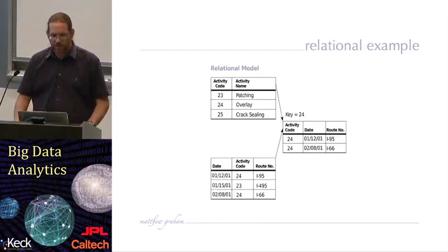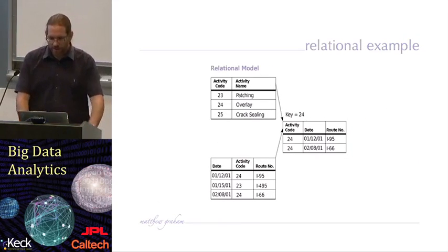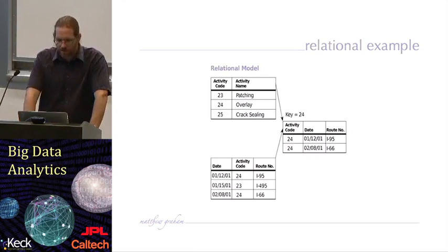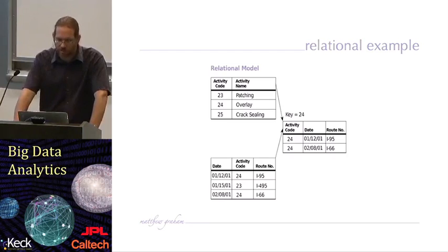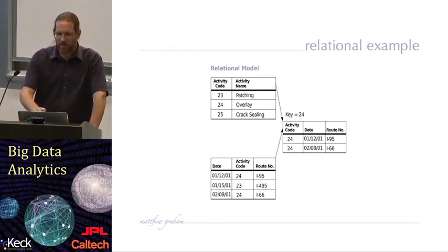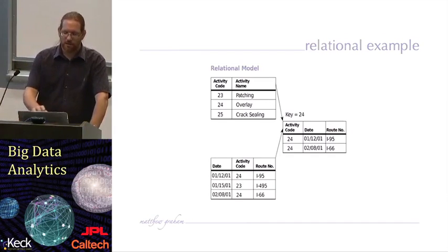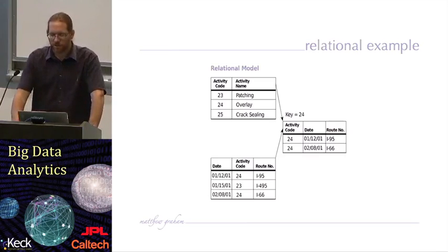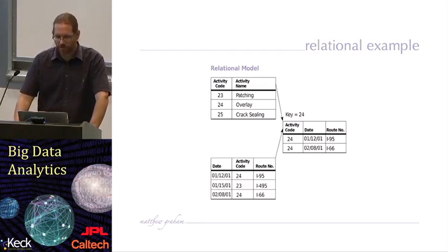This is an example of a relational model. In this particular case, we have three relations — three tables. One has two attributes (two columns) and the other two have three columns and three attributes with individual rows. You can see there are relations between them where a particular attribute in one of the tables is expanded in one of the other tables — for example, an activity code with information associated with it.